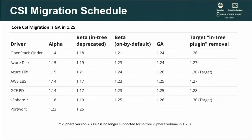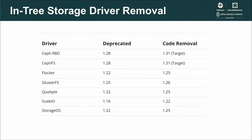CSI migration is something that we have been working on for several releases. Some in-tree drivers are getting removed and others are targeted for removal. Some in-tree drivers do not go through CSI migration. GlusterFS in-tree driver was removed in 1.26 release. Both Portworx and RBD in-tree drivers are deprecated in 1.28. We are targeting code removal in the 1.31 release.